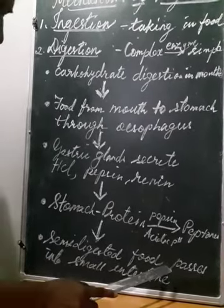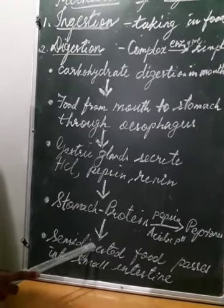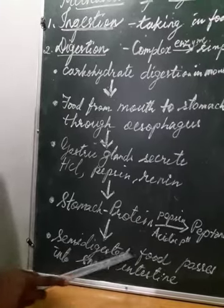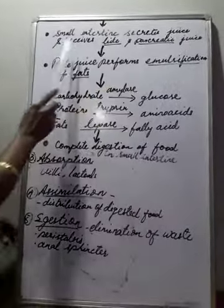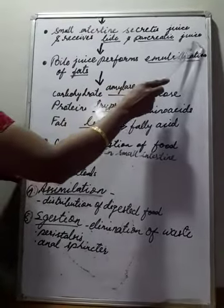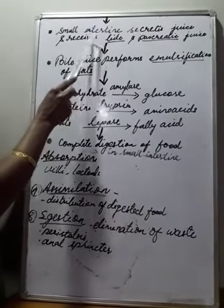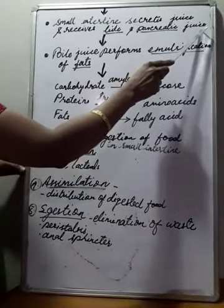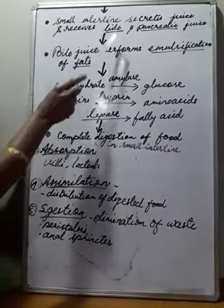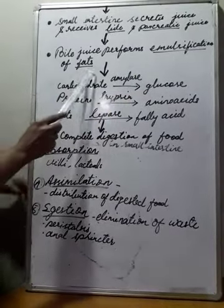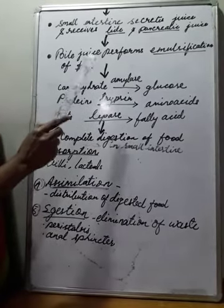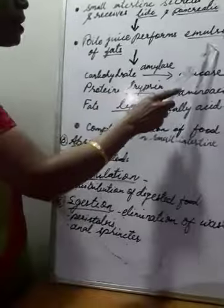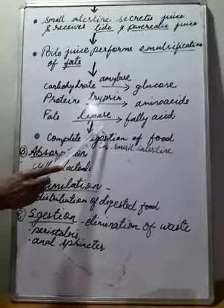From the pyloric sphincter, muscles of the stomach push the food to the small intestine. The small intestine secretes juice and receives bile and pancreatic juice. The intestinal glands also secrete juice. The duodenum, the first part of the small intestine, receives bile from the liver and pancreatic juice from the pancreas. Bile juice performs emulsification of fats — the larger fat molecules are broken down into smaller ones. If bile juice did not perform emulsification, the fats cannot be digested by the enzymes in the small intestine.